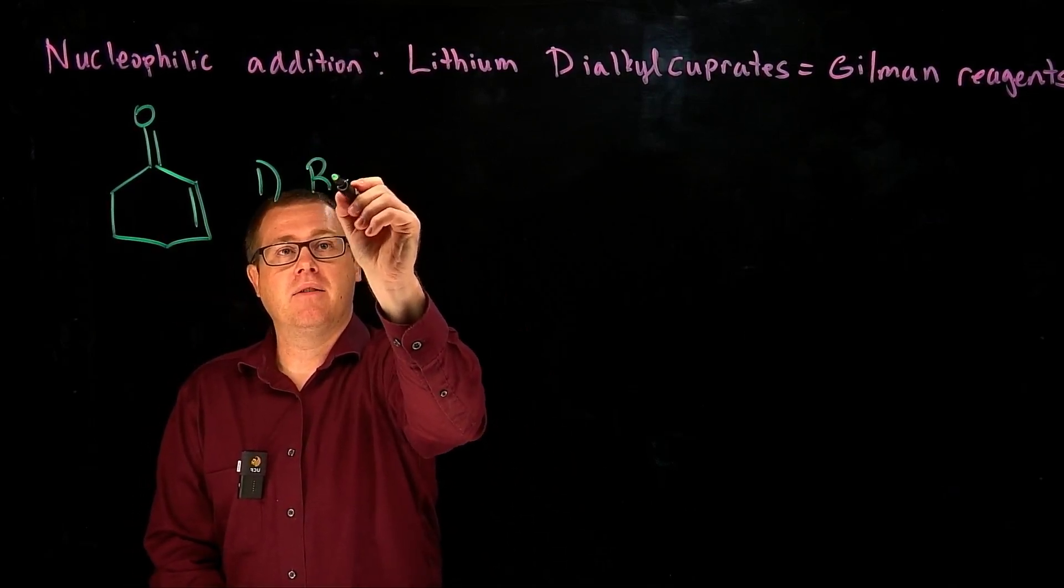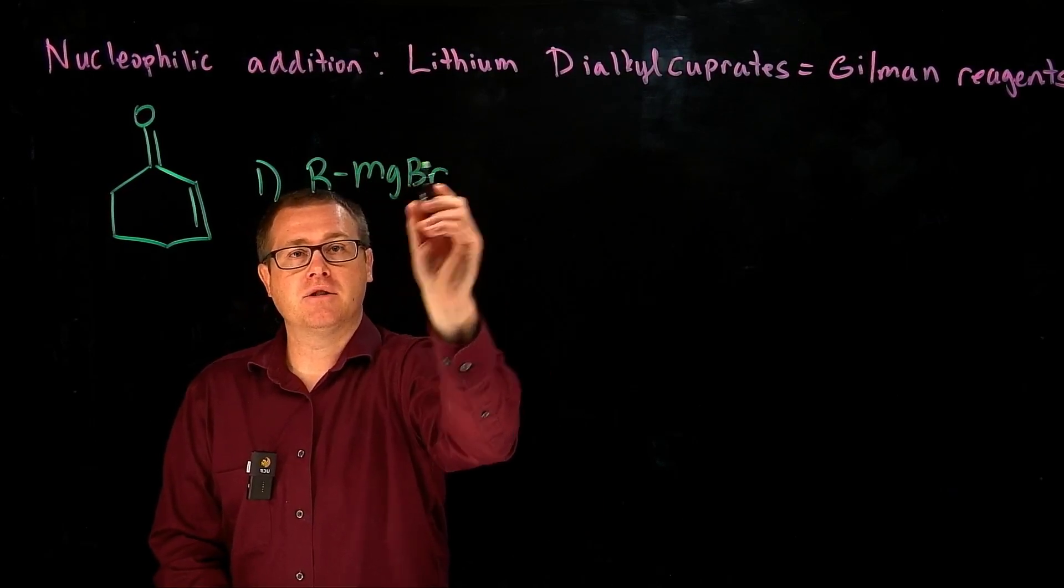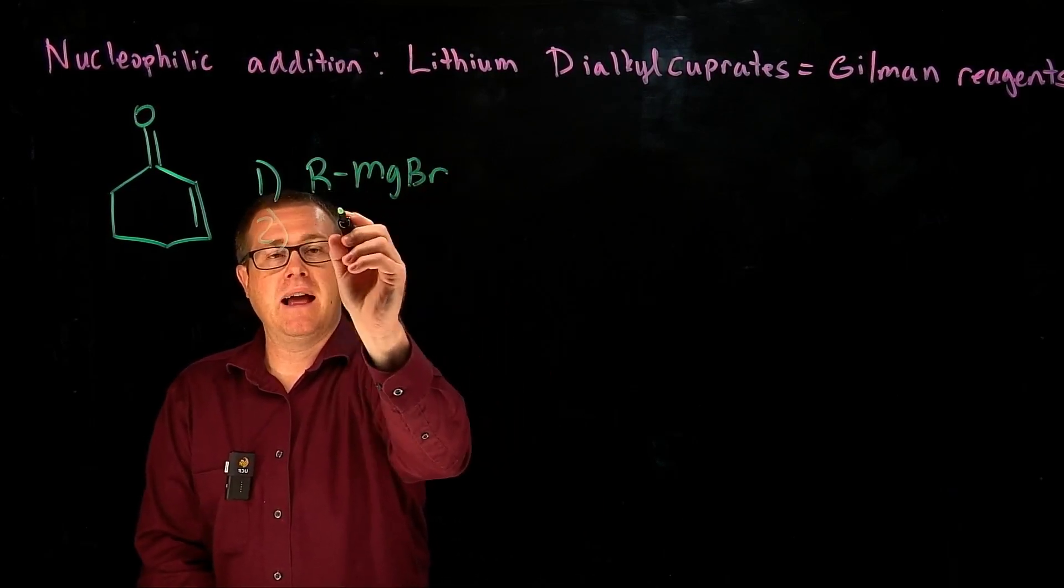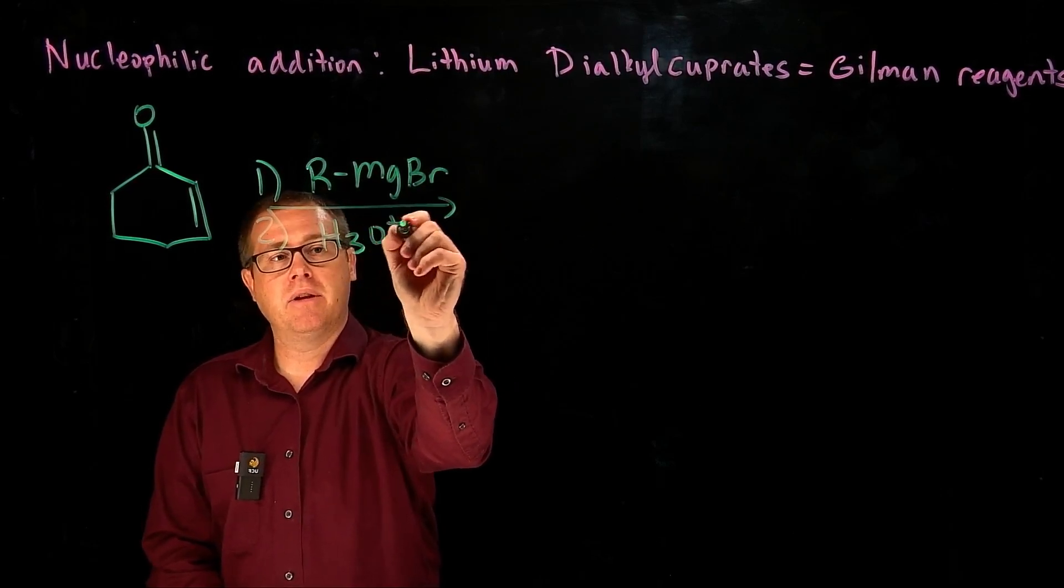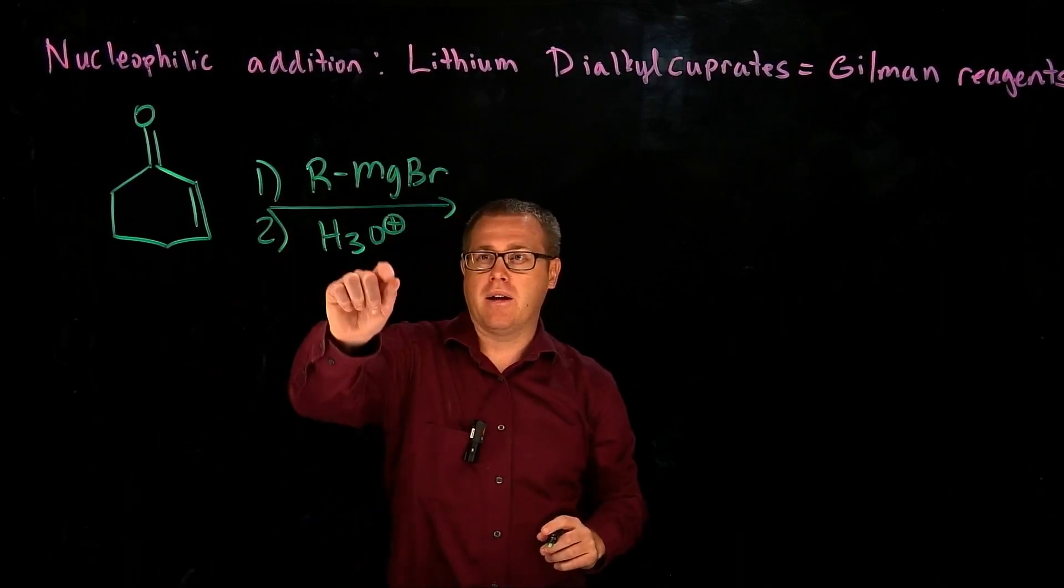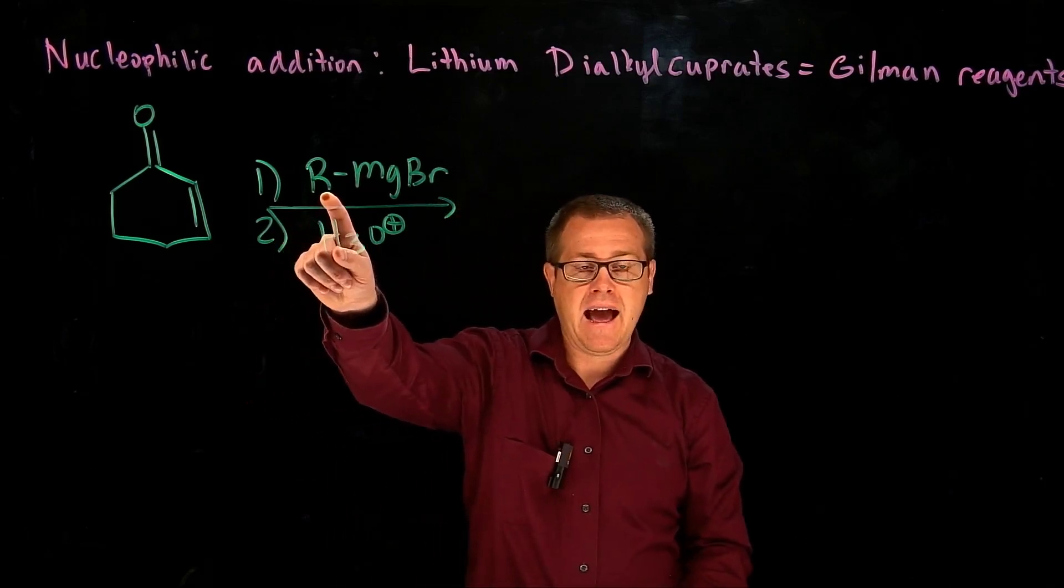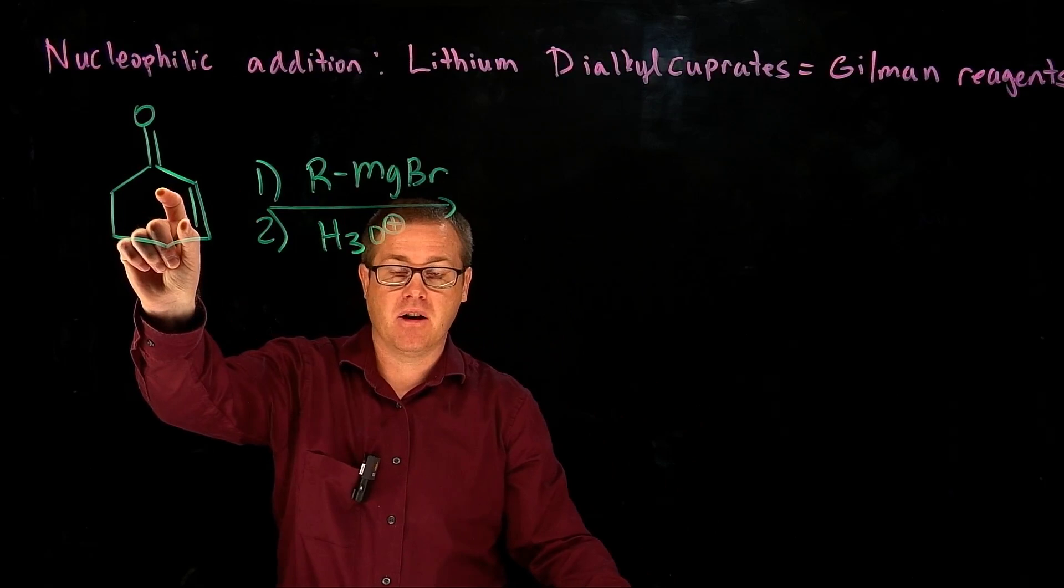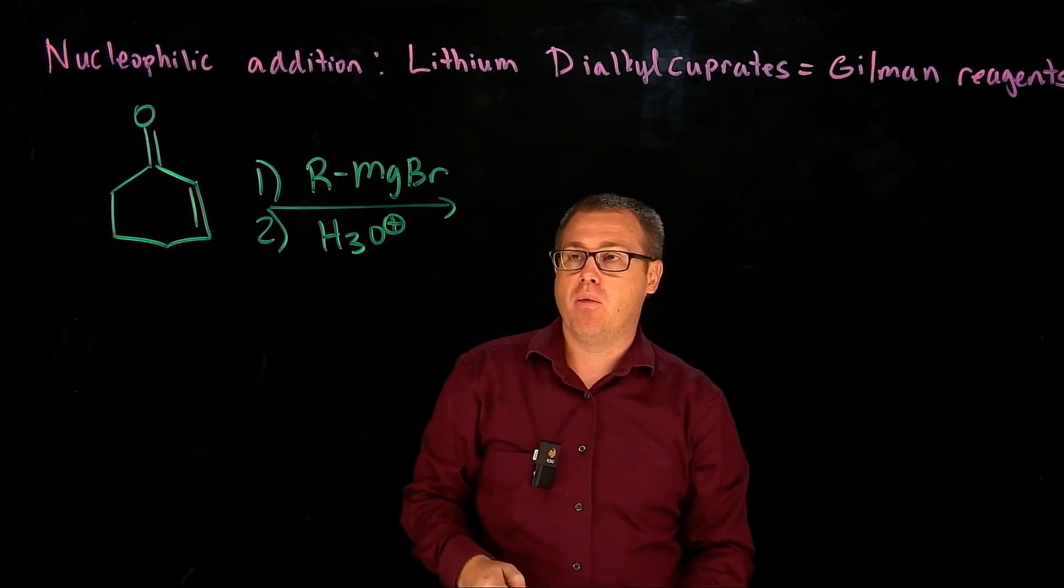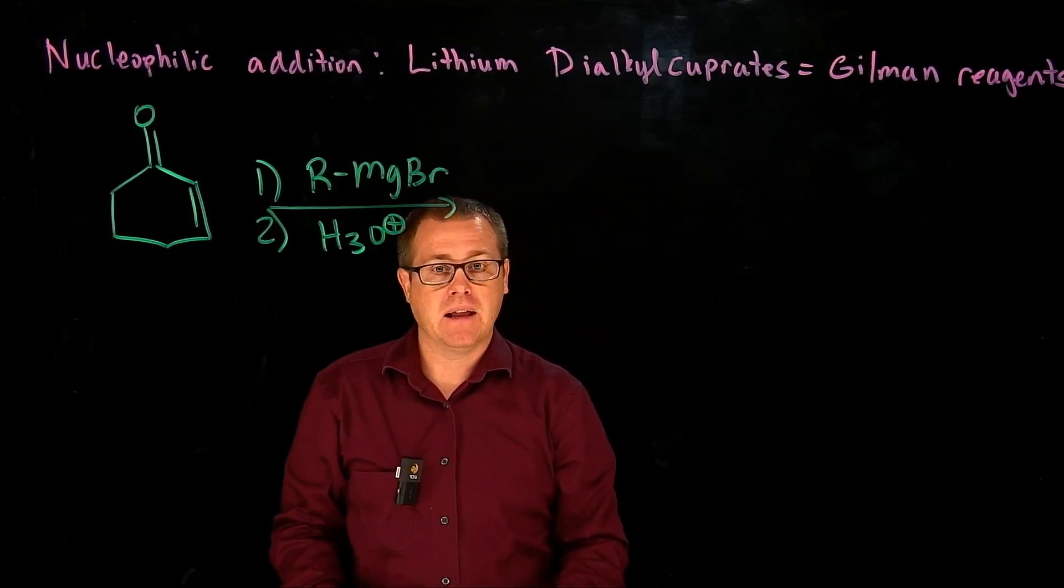So if we have a Grignard reagent right there, and then we would have to have an acidic workup or an aqueous workup, where is that R going to attach when we have an alpha-beta-unsaturated carbonyl compound? If we go back to our notes or the last video,